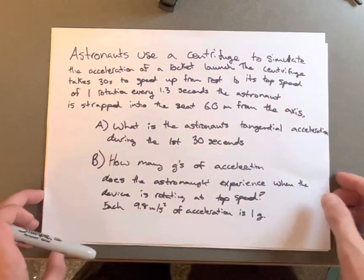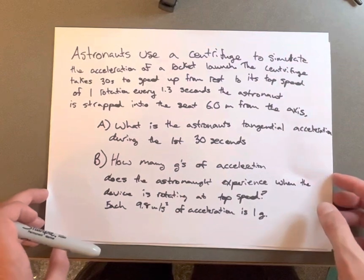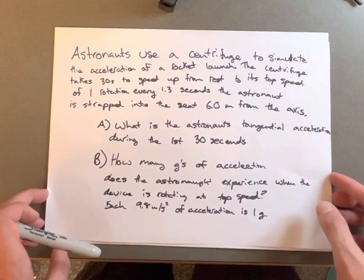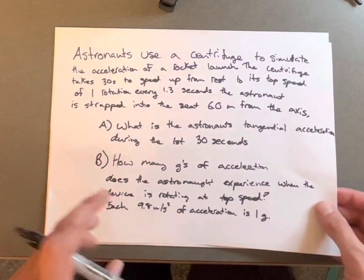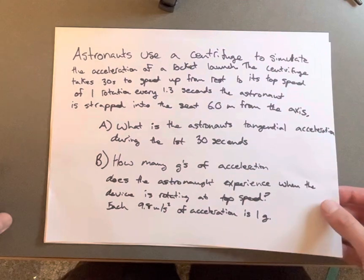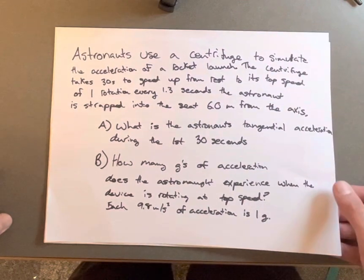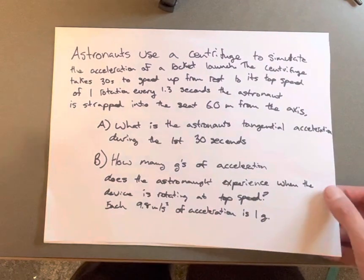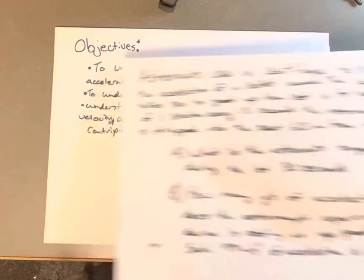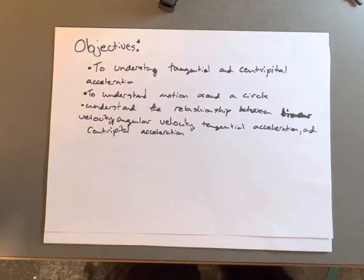What is the astronaut's tangential acceleration during the first 30 seconds? And for part b, how many g's of acceleration does the astronaut experience when the device is rotating at top speed? Each g of acceleration is equal to 9.8 meters per second squared.